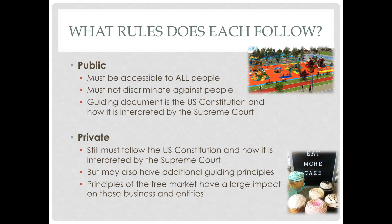Let's look at what rules each must follow. Something that is public, since it is funded by the government, must be accessible to all people. It cannot discriminate against people because, in essence, all of us are paying for it. Whether we use it or not, a little bit of our property tax is taken and used to supply a public park. Therefore, it must be accessible to all people. It is not acceptable for a public entity to discriminate, limit, or stop certain people from using that good or service. If it is public, it is public for everyone. The guiding document for public institutions is the Constitution, as interpreted by the Supreme Court.